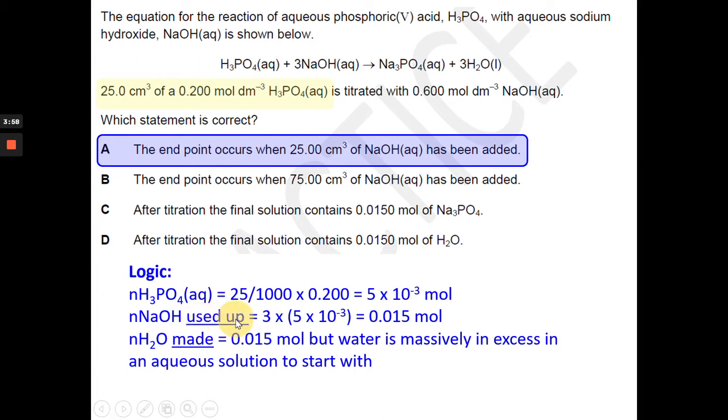Then it says after titration the final solution contains 0.015 moles of Na3PO4. But we just said that the NaOH is 0.015 moles. There's a bit of confusion going on here. And what they're doing is giving you the right amount, but they're saying another of the two species. So part C is no good.